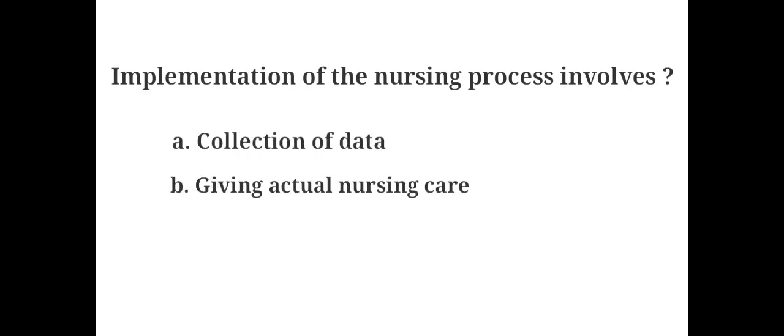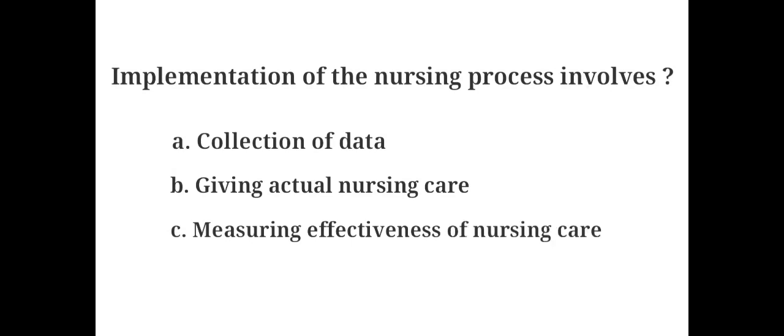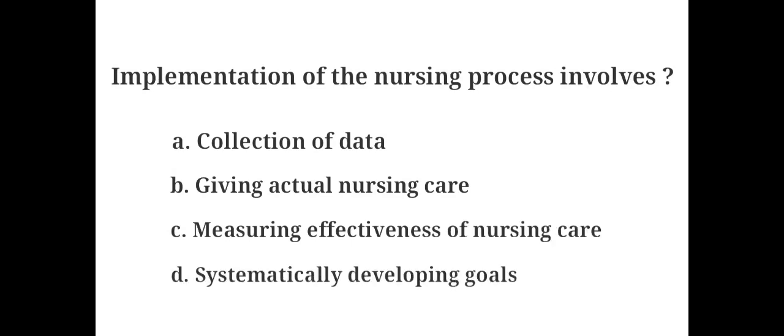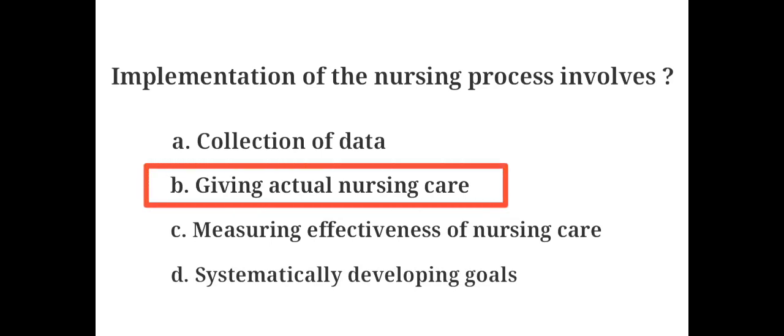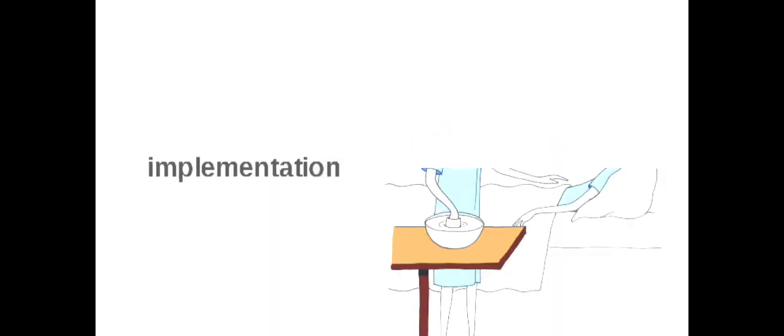Implementation of the nursing process involves: A. Collection of data, B. Giving actual nursing care, C. Measuring effectiveness of nursing care, D. Systematically developing goals. The answer is B. Giving actual nursing care. Implementation is the step in the nursing care plan where the patient care plan is actually followed in action.